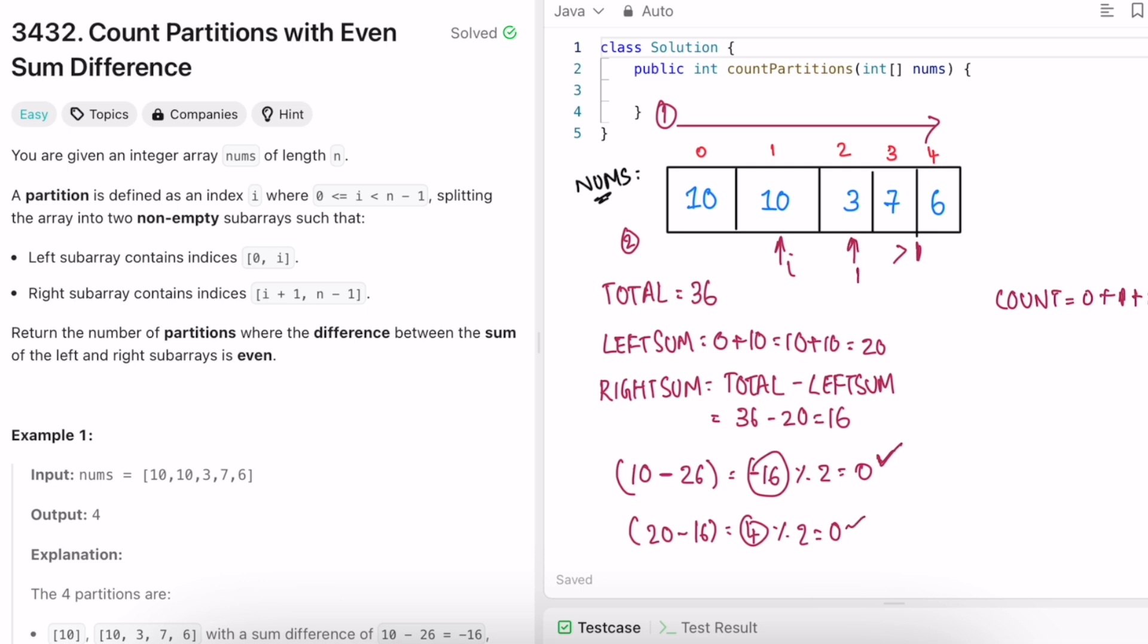So similarly again, when i will go here, we add that to left sum which is equal to 23. Right sum will become 36 minus 23 which is equal to 13. Now again we have to check left sum is 23 minus 13 which is equal to 10. 10 mod 2 is equal to even, so increment count.